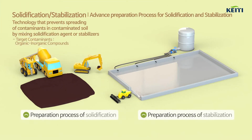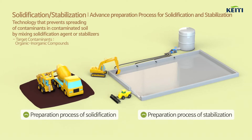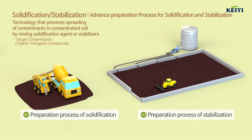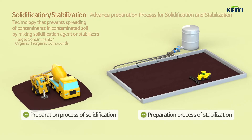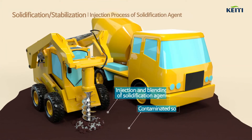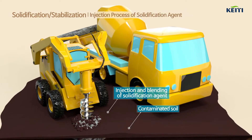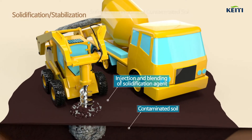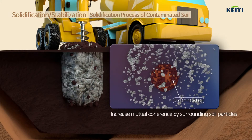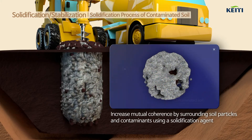Solidification and stabilization are techniques used to remediate contaminated soil by mixing solidifying or stabilizing agents to prevent the migration and spread of contaminants. Solidification involves the injection of solidifying agents such as cement to turn the soil and contaminants into a solid mass to prevent the migration and spread of contaminants.